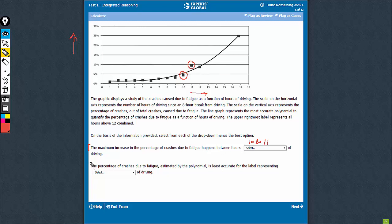Second part is quite straightforward. The polynomial is least accurate for which label? Of course, this label because this does not lie on the expression. This lies out of the expression and this is referring to hour number 11, okay? So this answer should be 11 hours of driving.